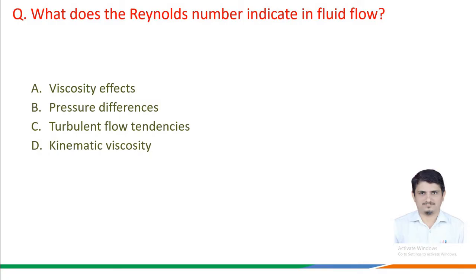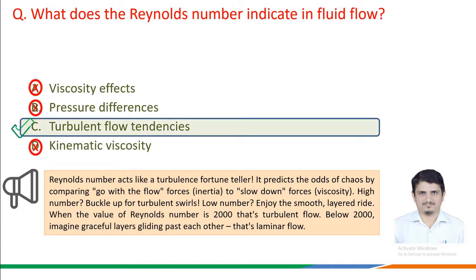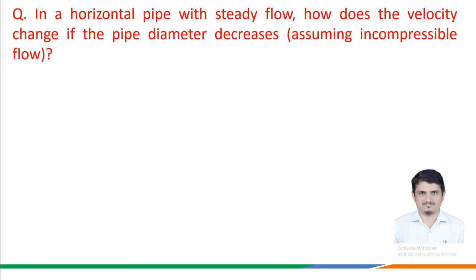What we must know to answer this question correctly: Reynolds number acts like a turbulent fortune teller. It predicts the odds of chaos by comparing inertia forces to viscosity forces. Higher Reynolds number values indicate turbulent flow; low values indicate a smooth, layered ride. When the Reynolds number is above 2000, that indicates turbulent flow; below 2000, we have graceful laminar flow. Therefore, the correct answer is option C: Reynolds number indicates turbulent flow tendencies.